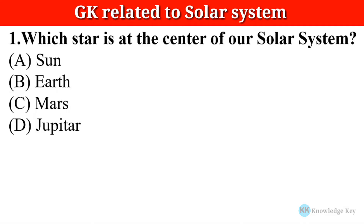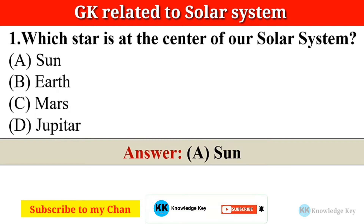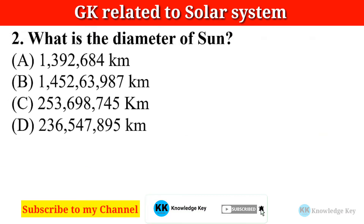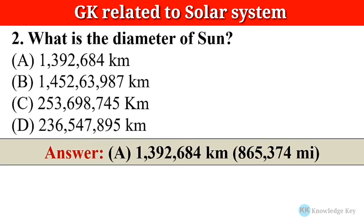Question number one: Which star is at the center of our solar system? The correct answer is option A — Sun. Question number two: What is the diameter of the Sun? The correct answer is option A — 13,92,684 kilometers,